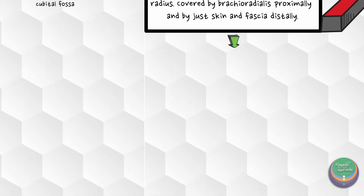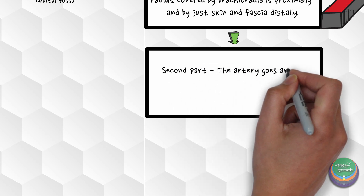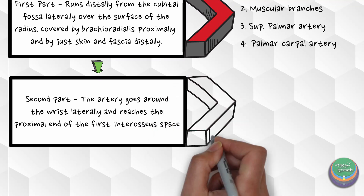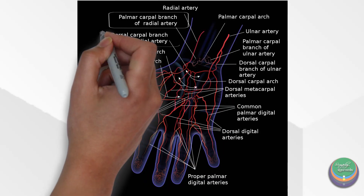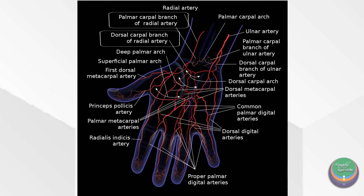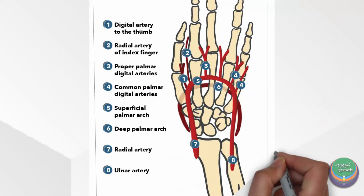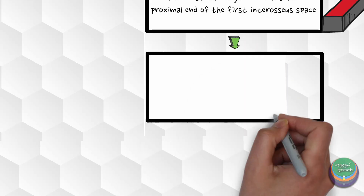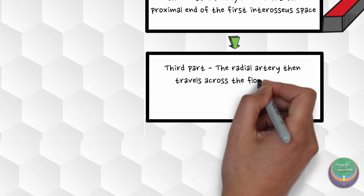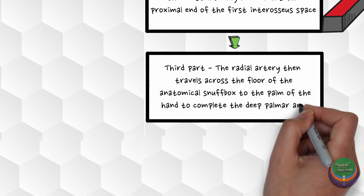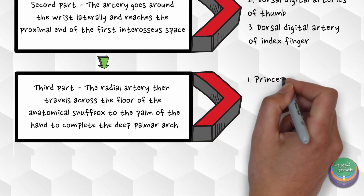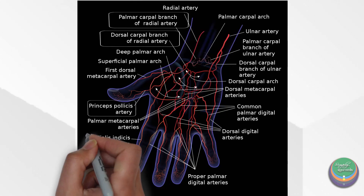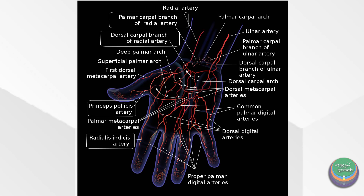At the wrist, the radial artery goes around it laterally and reaches the proximal end of the first interosseous space — this is the second part. The dorsal carpal artery arises while the radial artery winds laterally across the wrist, forming the dorsal carpal arch. The two dorsal digital arteries of the thumb and the dorsal digital artery to the radial side of the index finger also arise from this part. The radial artery then travels across the floor of the anatomical snuffbox to the palm of the hand to complete the deep palmar arch. The princeps pollicis artery is given out where the main radial artery enters the palm, giving rise to two palmar digital arteries. The radialis indicis artery is given out immediately distal and runs along the radial border of the index finger.